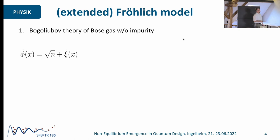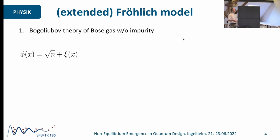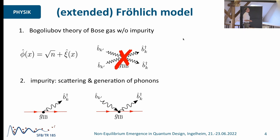Since we have a weakly interacting condensate, the typical way to describe this is to take the bosons, split off the homogeneous condensate, and add some small fluctuations. Then we expand the theory to second order in the fluctuations, diagonalize the second order term, and ignore all higher order processes. Basically, what we end up with is a gas with non-interacting phonons. That's all very old and clear.